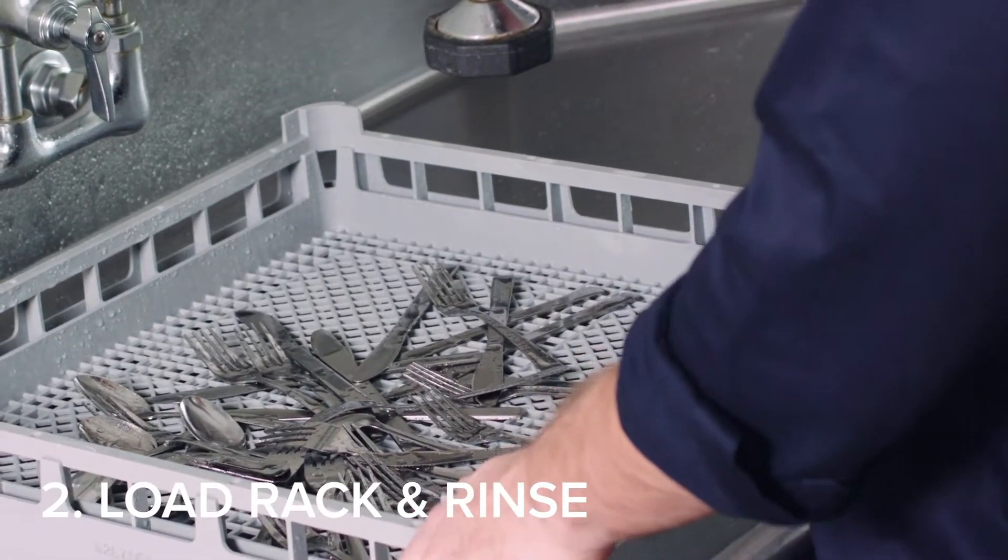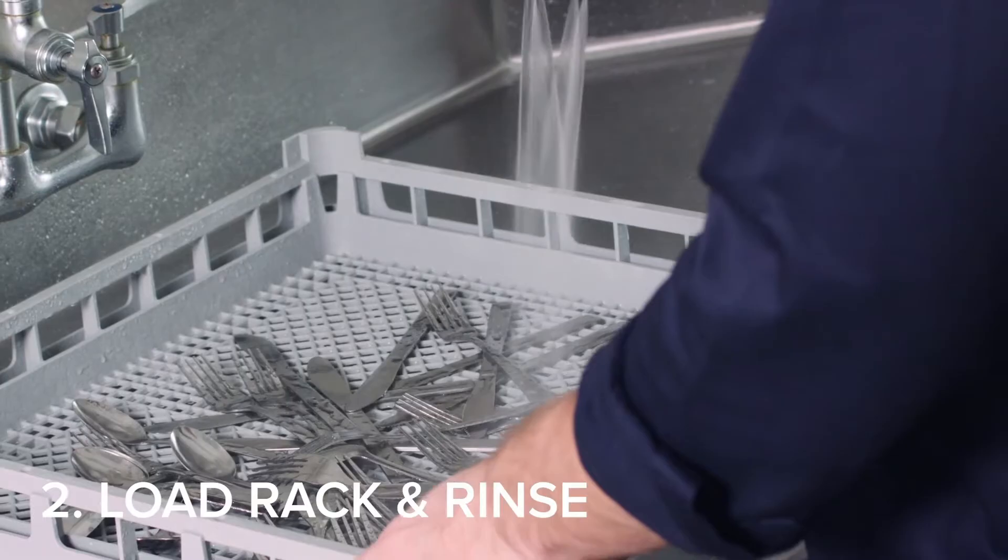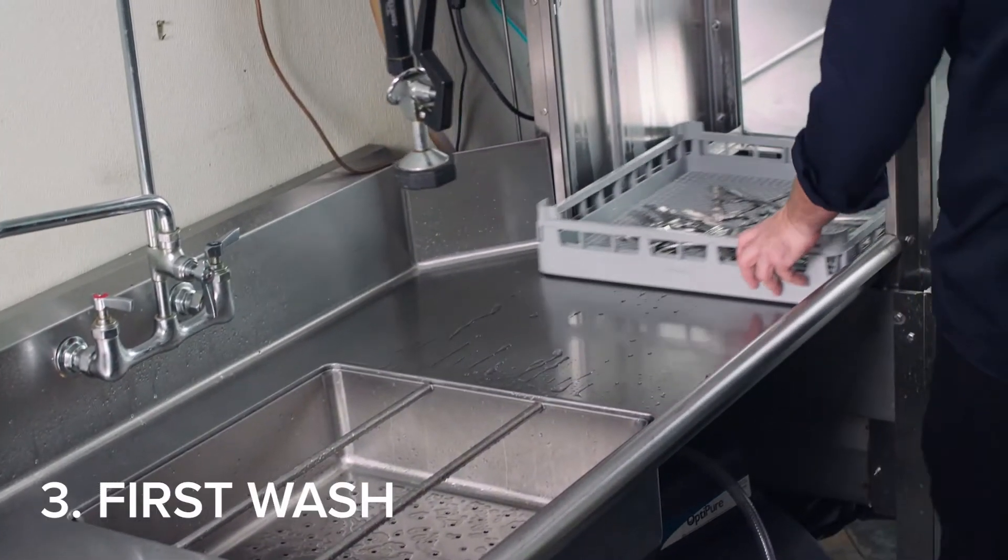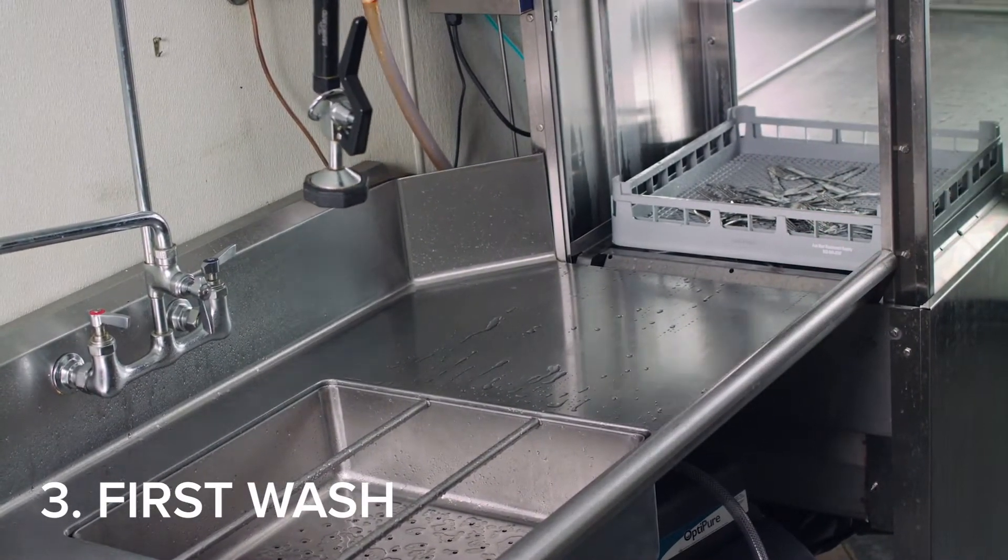Load the utensils into a flat rack. Rinse thoroughly to ensure no pre-soak solution enters the machine. Place the rack into the ware washer for the first wash.